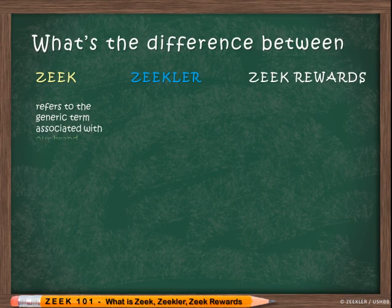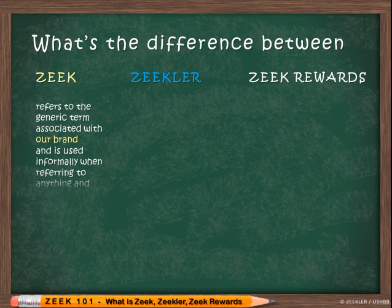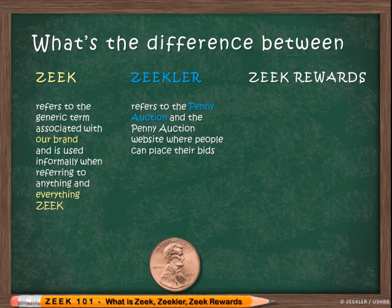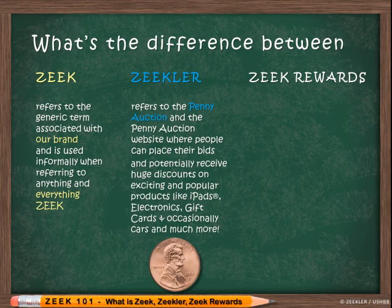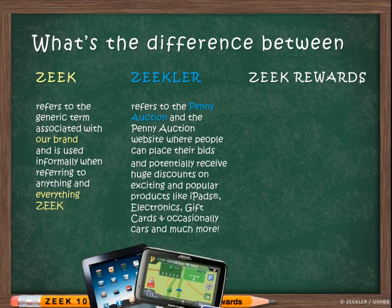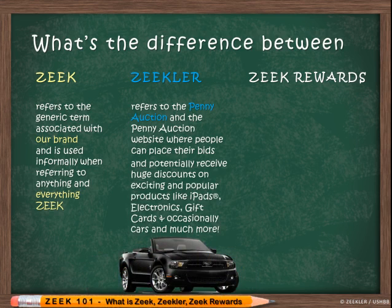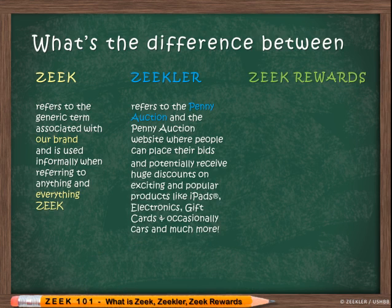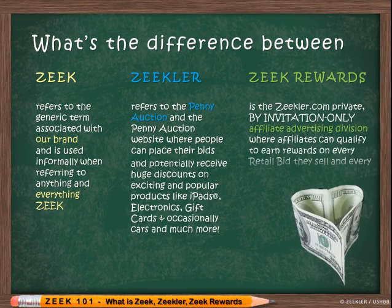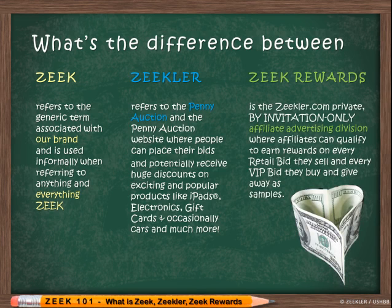Zeek refers to the generic term associated with our brand and is used informally when referring to anything and everything Zeek. Zeekler refers to the penny auction website where people can place their bids and potentially receive huge discounts on exciting and popular products like iPads, electronics, gift cards, and occasionally cars and much more. Zeek Rewards is the Zeekler.com private, by-invitation-only affiliate advertising division where affiliates can qualify to earn on every retail bid they sell and every VIP bid they buy and give away as samples.